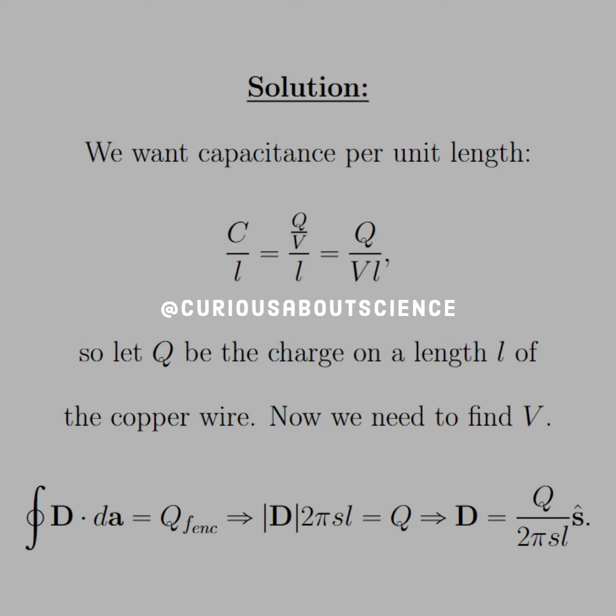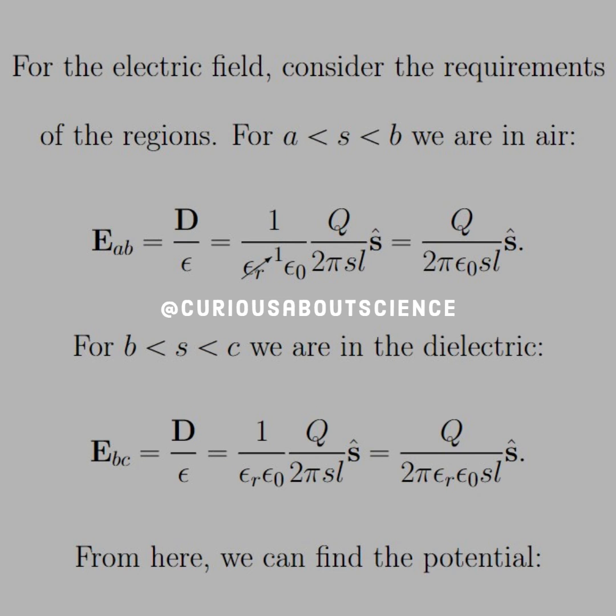But since we are a cylinder, the Gaussian surface yields a surface area of 2 pi S times L. So solving for D gives us Q over 2 pi S L in the S-hat direction. We found the electric displacement so that we could then find the electric field from it with the different changes of permittivity since E is equal to D over epsilon.